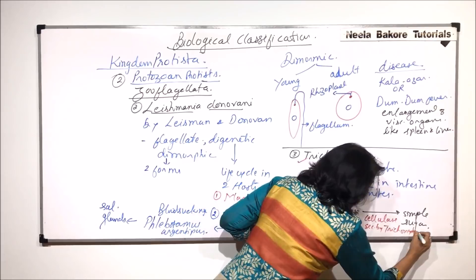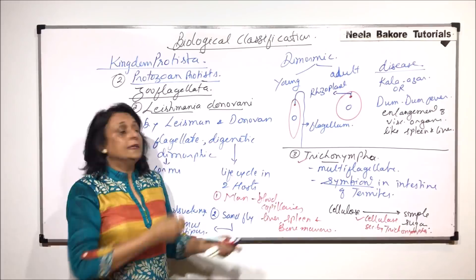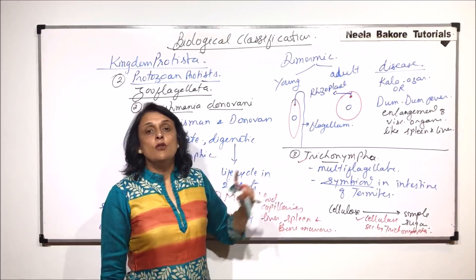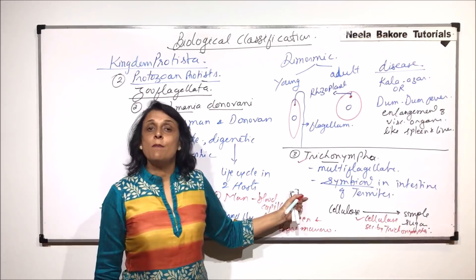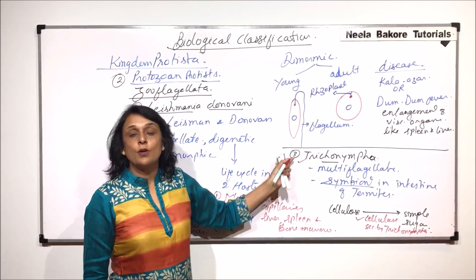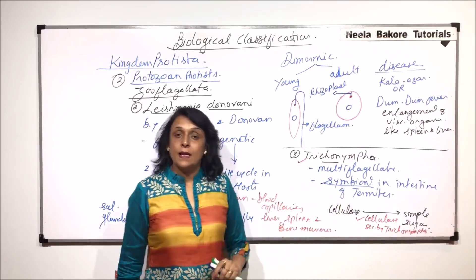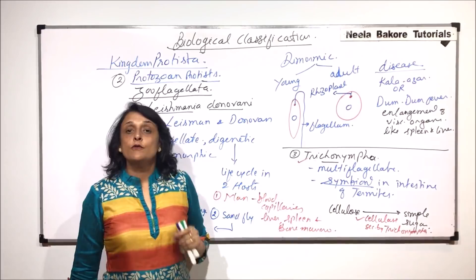The advantage received by termites is that they are able to digest cellulose, because no animal can digest cellulose on its own. It has to have some symbiotic microbes. Those microbes could be bacteria or it could be a protozoan protist like Trichonympha. So this is the benefit gained by the termite. Now what do these protists get? They get food and shelter from the termite.